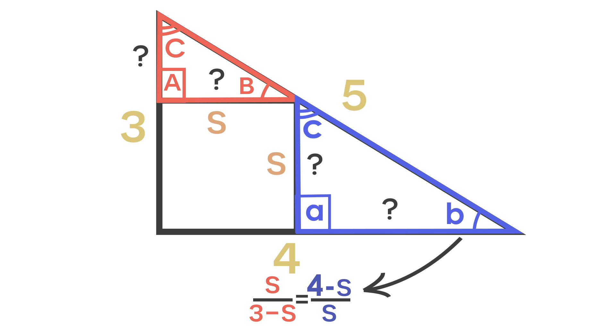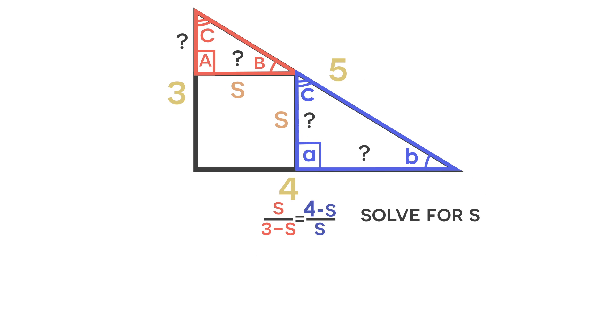And now we have an equation in which we can solve for s. So the first thing we can do is cross multiply. And if we cross multiply, we get s squared is equal to 4-s multiplied times 3-s. And if we multiply the parentheses on the right side of the equation, we get s squared minus 7s plus 12.